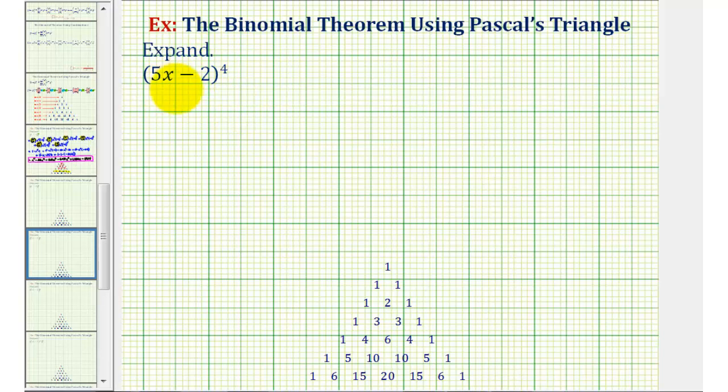We want to expand the quantity 5x minus 2 raised to the fourth power using the binomial theorem as well as Pascal's triangle.